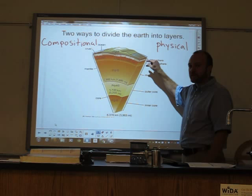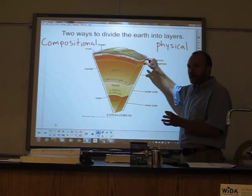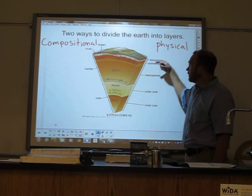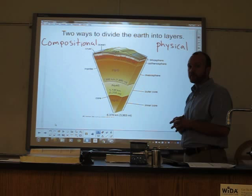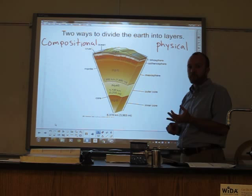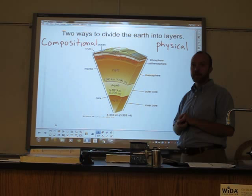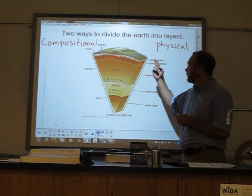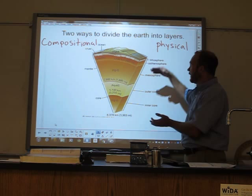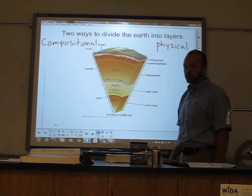The asthenosphere is solid enough to transmit earthquake waves, but it's plastic enough that it can slide around. On top of the asthenosphere, the upper layer of the crust we call the lithosphere. 'Litho' is a prefix that means rock — like a lithograph, a monolith, or 'Paleolithic' meaning the old stone age. So the lithosphere is the outer layer. That gives us five layers based on physical properties and three layers based on chemical properties.